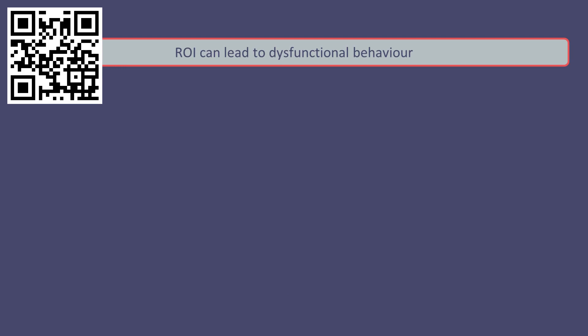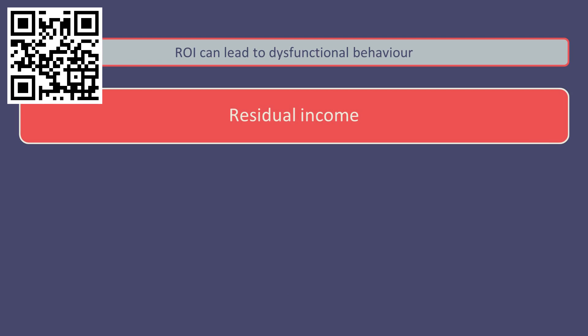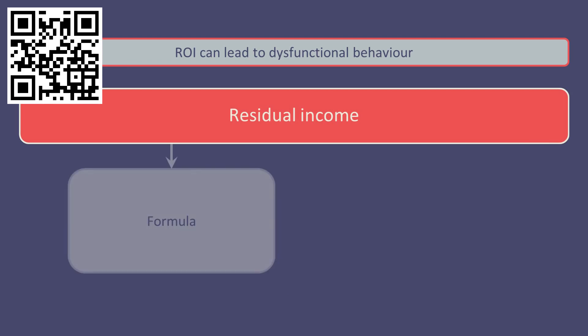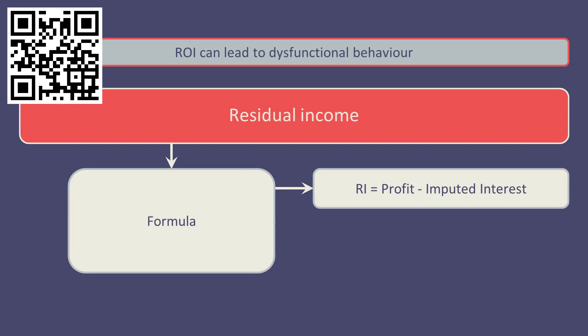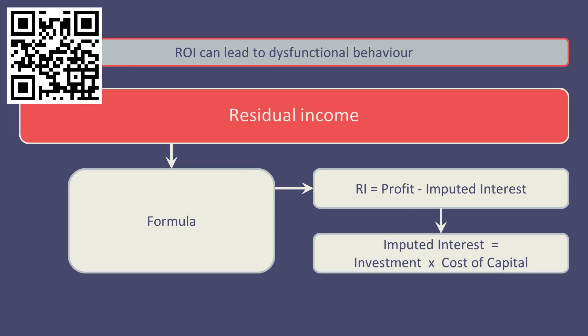For this reason, other methods of divisional performance assessment, such as residual income, have evolved. The residual income is calculated as the profit minus the imputed interest charge. The imputed interest charge represents the minimum acceptable return to the investors, calculated as the investment cost multiplied by the company's cost of capital.